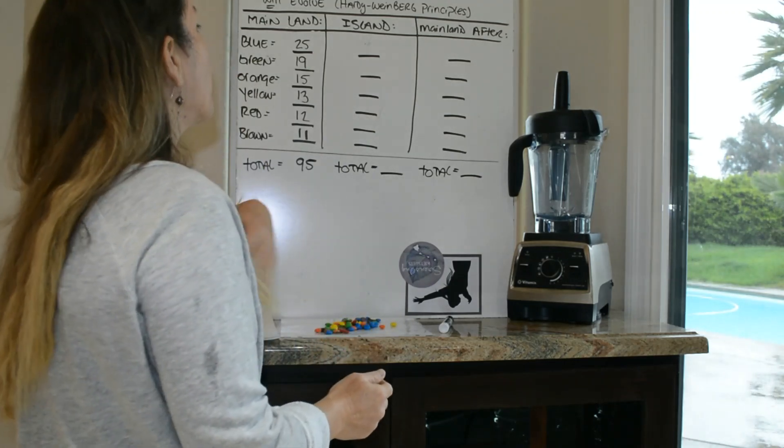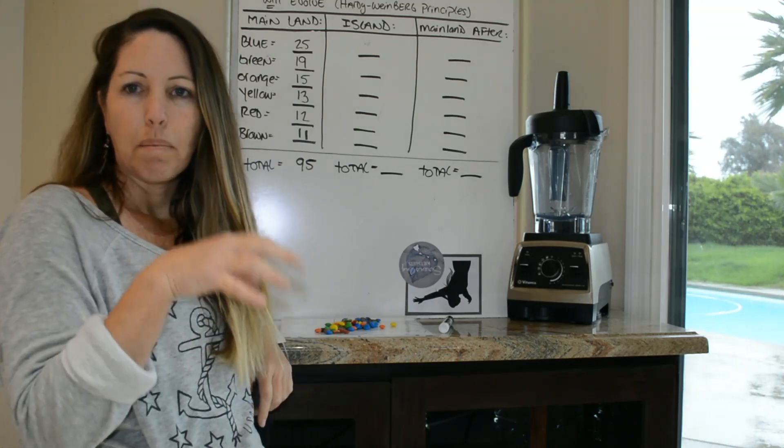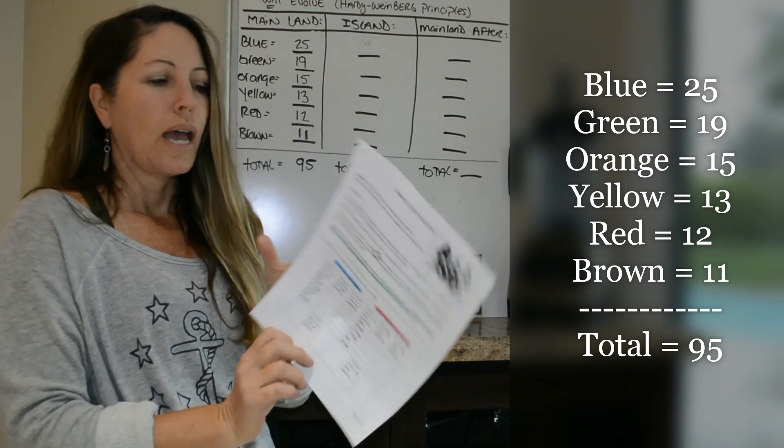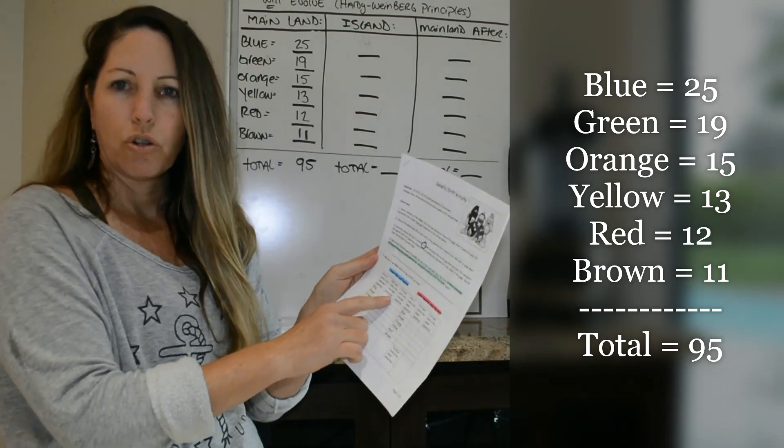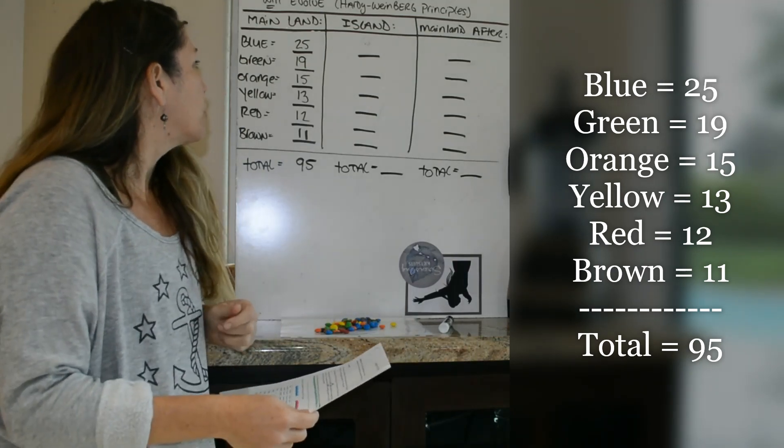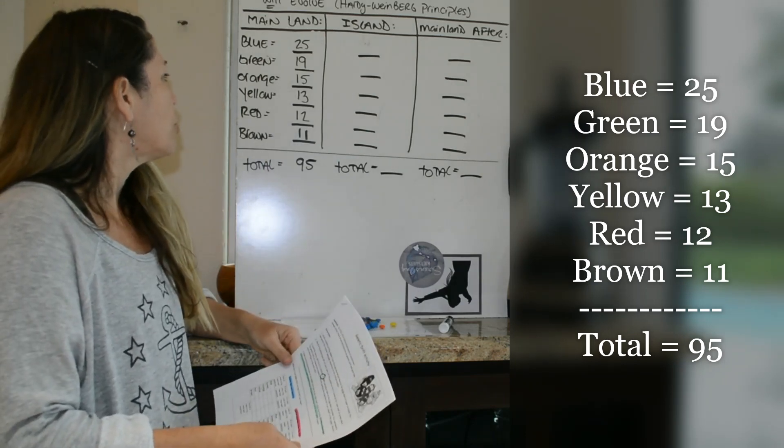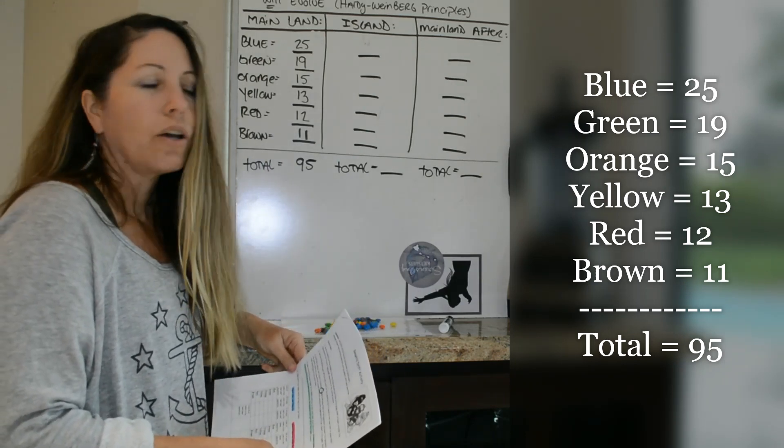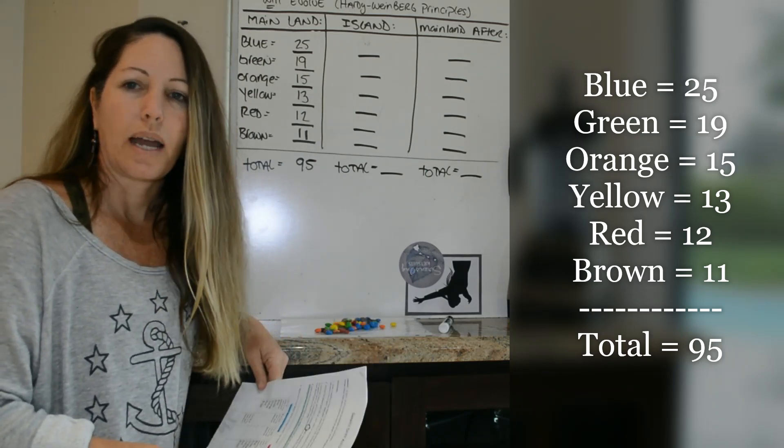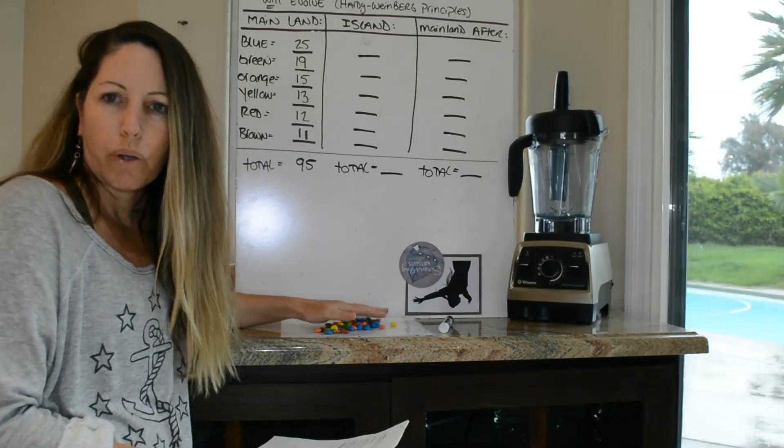And I wrote down how many of each of those colors that I had in that bag. So I want you guys to take your lab, which you guys have downloaded, and on the very first where it says Original Mainland, I want you to write down these numbers. Now the numbers are 25 blue, 19 green, 15 orange, 13 yellow, 12 red, and 11 brown. So your total is out of 95, so we have 95 M&Ms that I originally started with in my population.